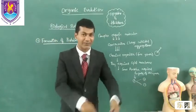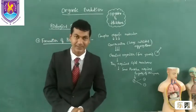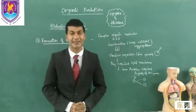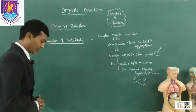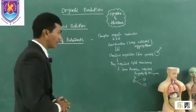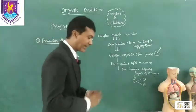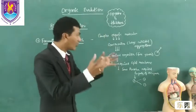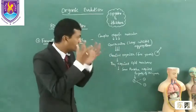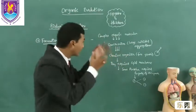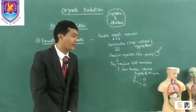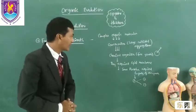In the last video we discussed how chemical evolution has taken place. Now let us discuss how the first living form was created from chemicals. Chemicals are formed into complex organic molecules, and due to the attraction forces among them, they all come together to form large colloidal aggregations. These large colloidal aggregations, through attraction forces between complex organic molecules, lead to the formation of coacervates.